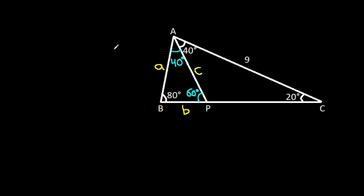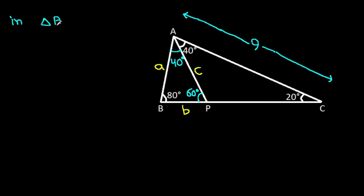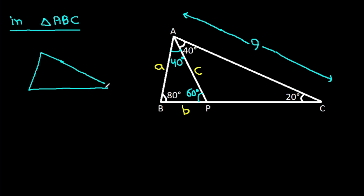We have AC, it's 9. In triangle ABC, this angle is 80 degrees and this angle is 40 degrees, that means AC will be equal to BC. And AC is 9, so BC will also be 9.